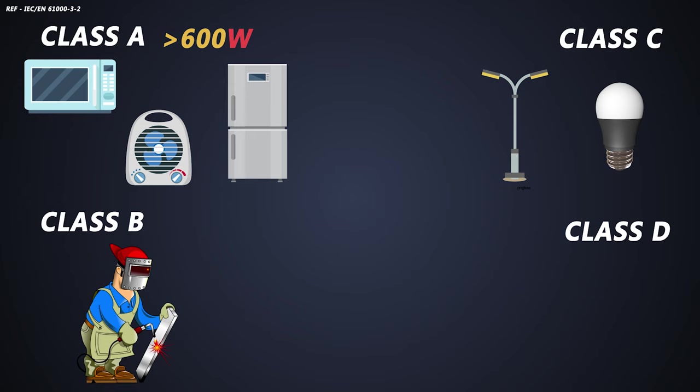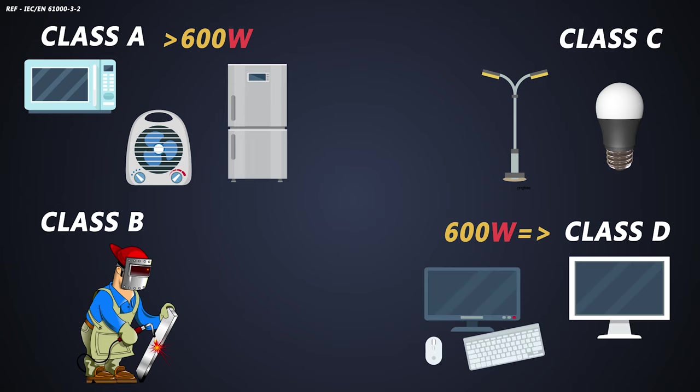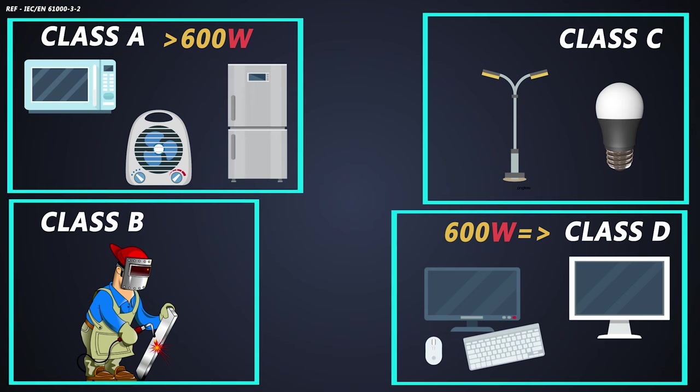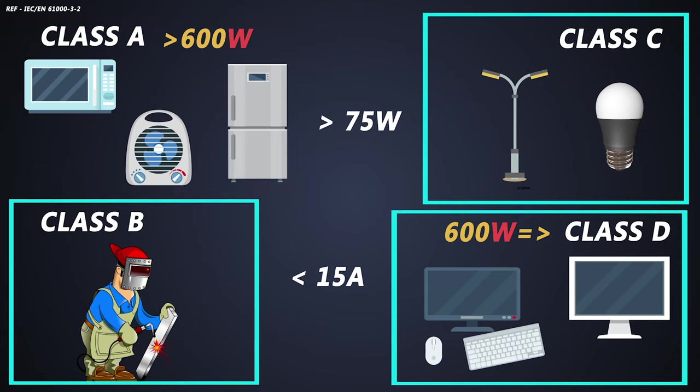The equipment which consumes 600 watts of power and lower than that come into this category. So all the televisions, personal computers, laptop chargers are class D type of loads. Only those loads which consume more than 75 watts of power and run on the current below 15 amperes come in these classes. And there are different types of power factor regulation requirements related to current harmonics for each class.